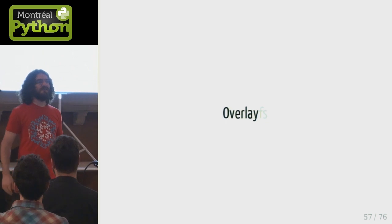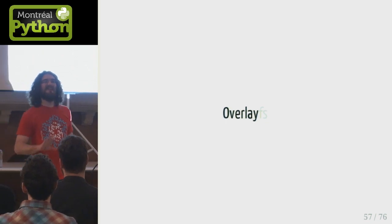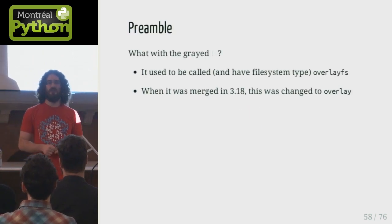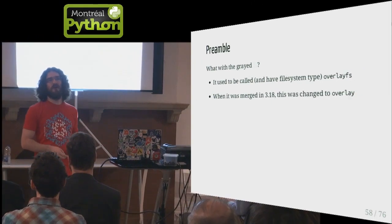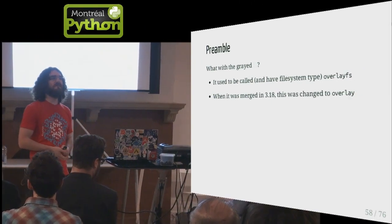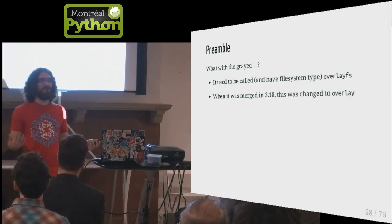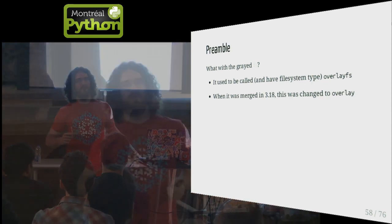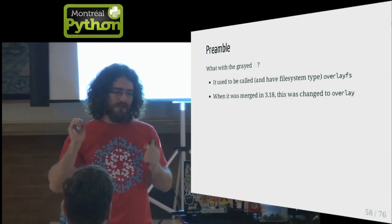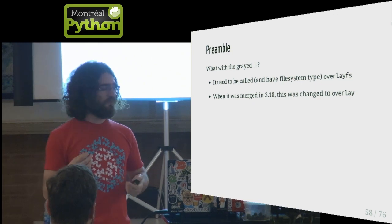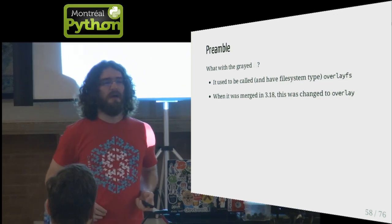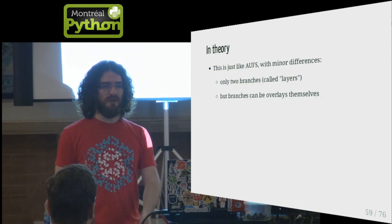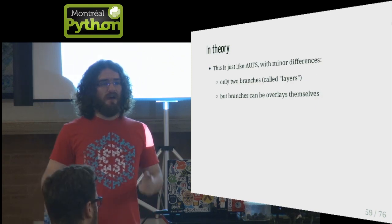OverlayFS is just like AUFS, except it's in the mainline kernel — available since kernel 3.18. This means everybody can get the advantages of AUFS — starting many containers memory-efficiently — without needing Debian or Ubuntu kernels specifically.